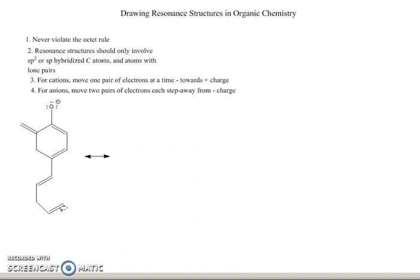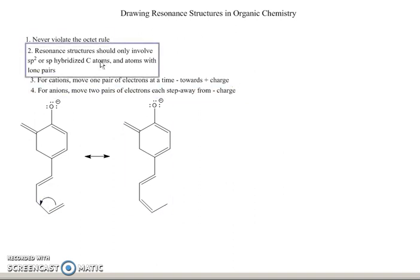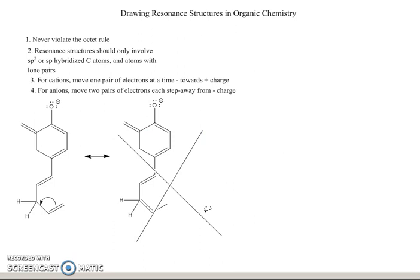Finally, you might be tempted to do something with this double bond down here — moving it to give you something like this. But you need to remember that this is an sp3-hybridized carbon atom. We never involve sp3-hybridized carbon atoms in resonance structures, because there are two other hydrogens here that are still in the structure, which violates the octet rule at this carbon. So this is not a valid resonance structure, which is why I put the X across it.